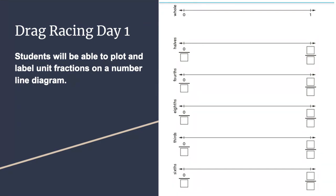Take a second to recall what a unit fraction is. A unit fraction is any fraction with the numerator being one. Examples of unit fractions are one-half, one-fourth, one-eighth, one-third, one-sixth, one-one-hundredth. It's one piece of the whole of whatever the denominator is saying that the whole is broken into.